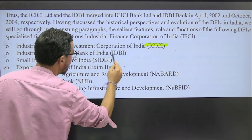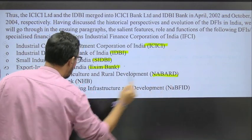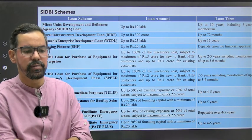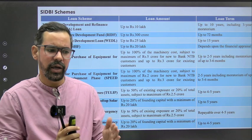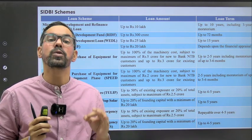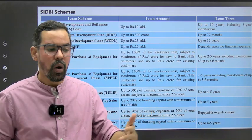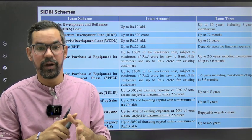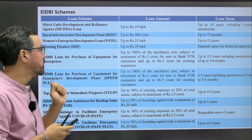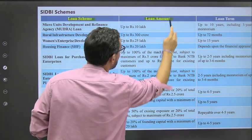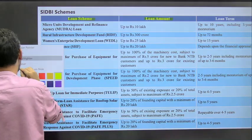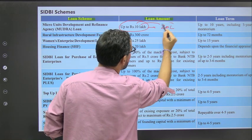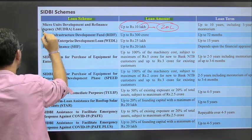We have a complete list of loan schemes with loan amounts and loan terms. The Mudra Scheme loan amount has changed - it is now from 10 lakh to 20 lakh. The Mudra Scheme comes under SIDBI as a kind of subsidiary.